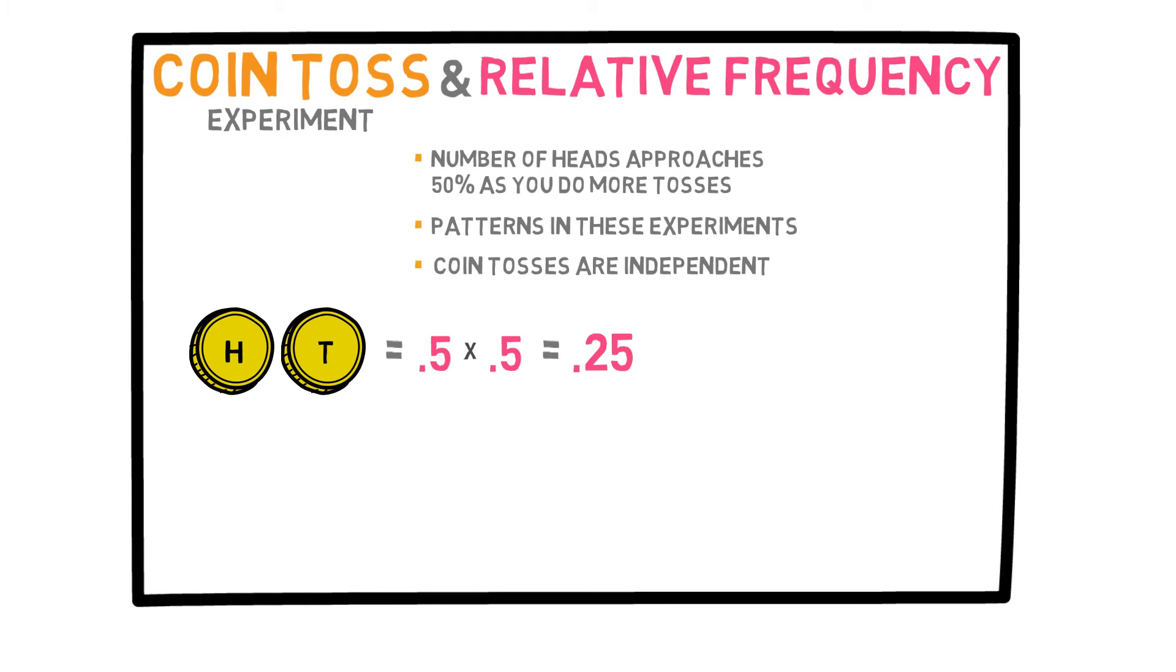Or, if I wanted to know the probability of getting a heads and two tails in a row, it would be 0.5 times 0.5 times 0.5 or 1 over 8. Here, the order matters.